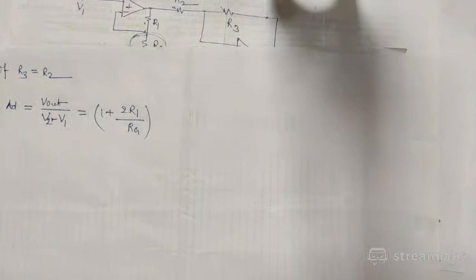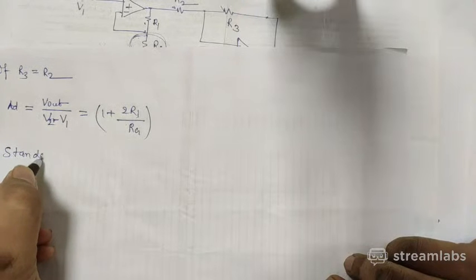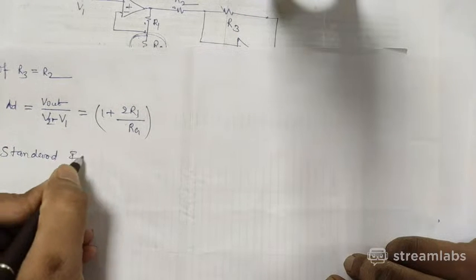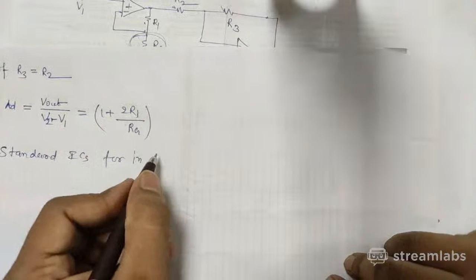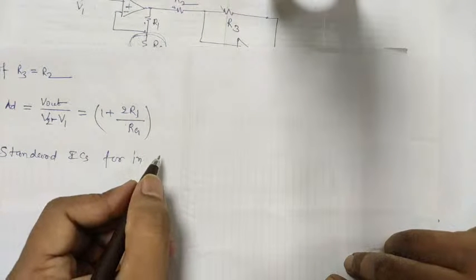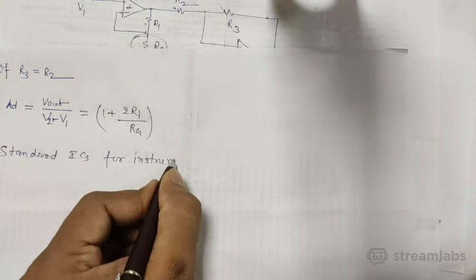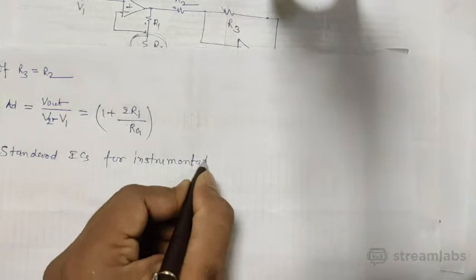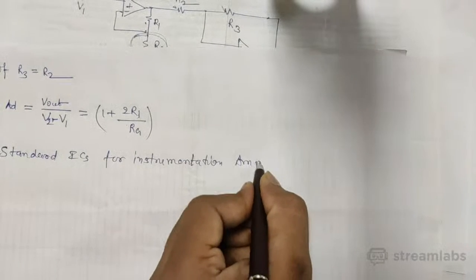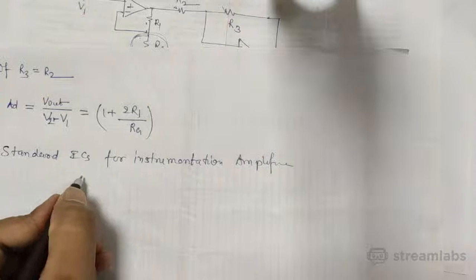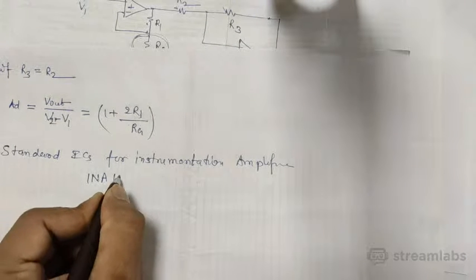Standard ICs are available for instrumentation amplifiers from companies like Texas Instruments and Analog Devices. They are termed INA128 and similar part numbers.